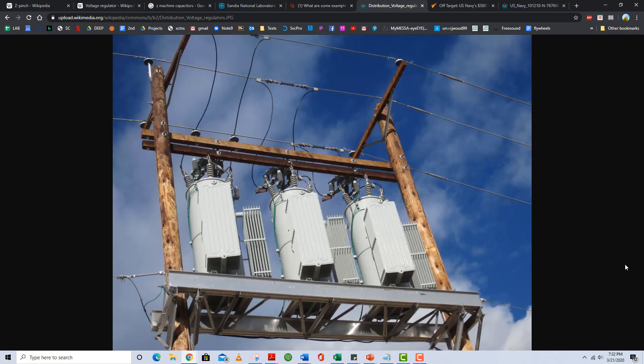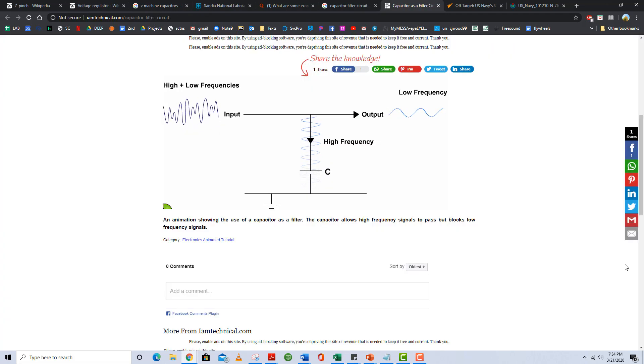Capacitors are used in power transmission to regulate voltage levels. Capacitors are probably most common in filtering circuits. Sometimes they block high frequencies and let the low frequencies through, other times they block the low frequencies and let the high frequencies through. This is important for a ton of different electronics applications.